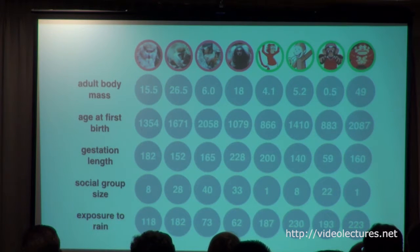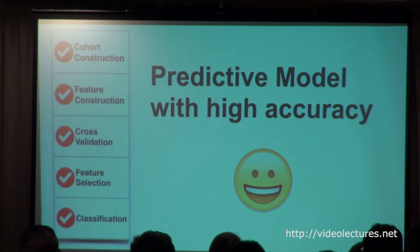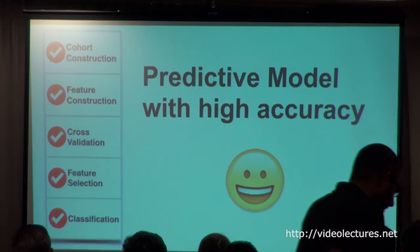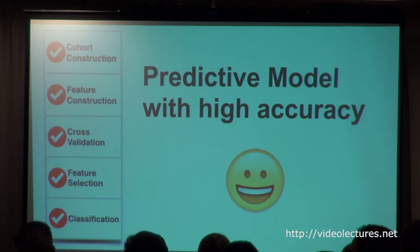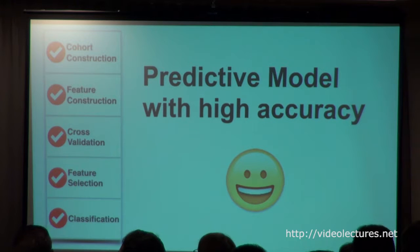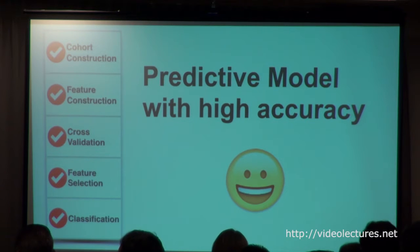If we follow a typical standard predictive pipeline — defining cohorts correctly, constructing features, doing cross-validation for robustness, running fancy feature selection algorithms, and running some fancy classifiers — we can get a predictive model with high accuracy. Our ecologist colleagues are very happy that we can get a 0.9 AUC or something like this. But of course, the next question is interpretability. They want to understand what the model is actually telling us if we're going to spend resources to eradicate mosquitoes around predicted primates.